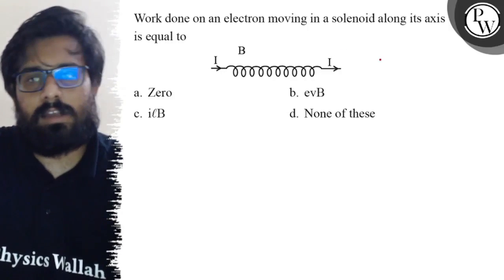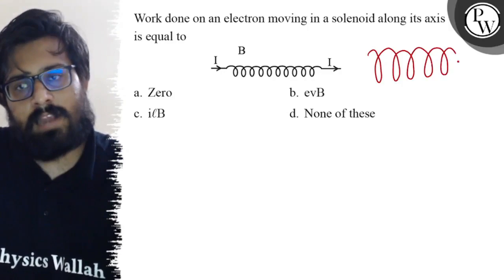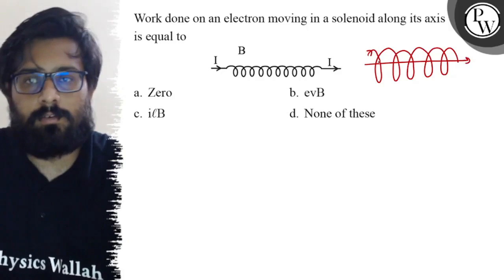So here in this question, as we know, in case of a solenoid, inside the solenoid the magnetic field is along this direction if the current is flowing like this, okay.